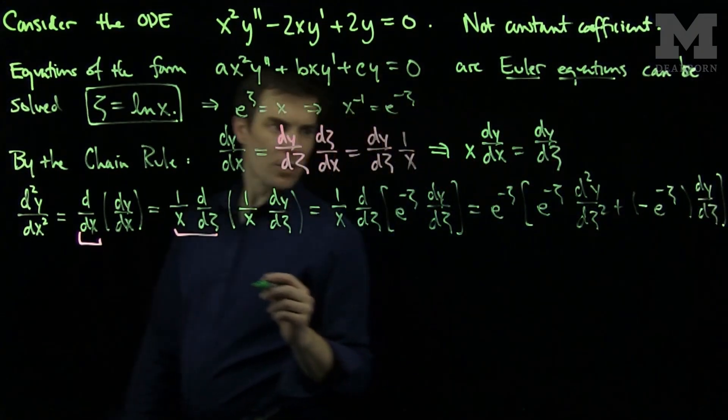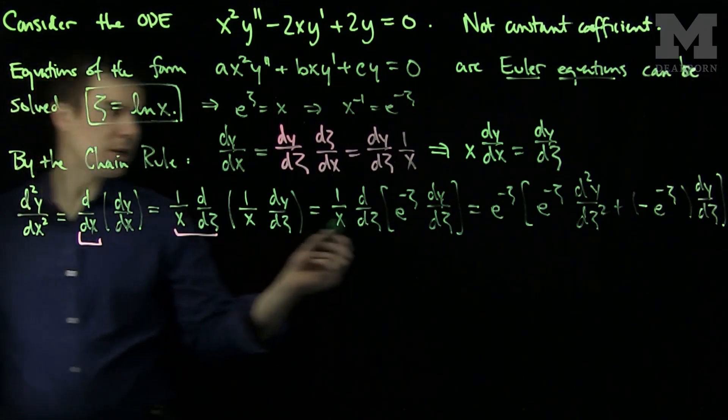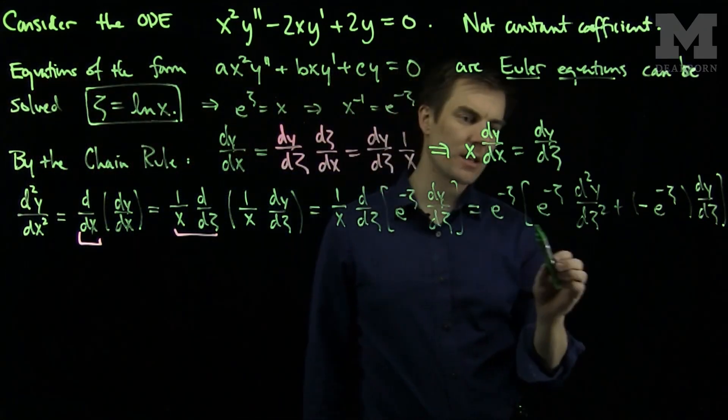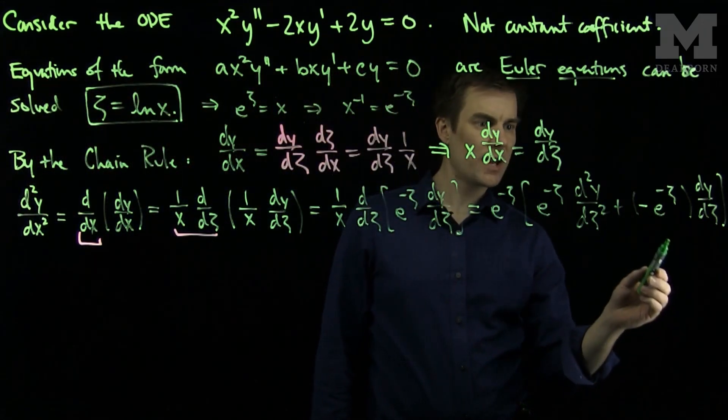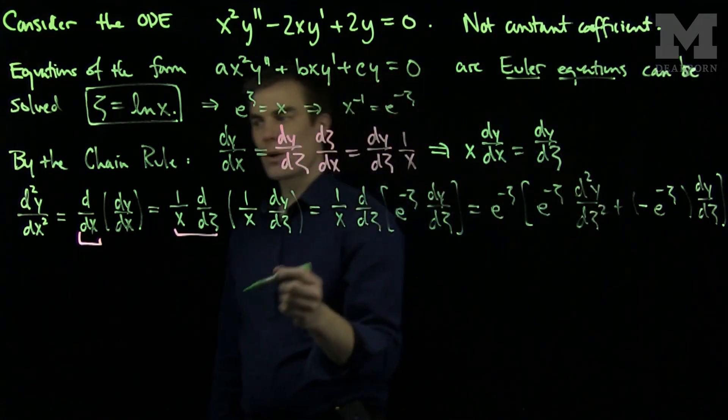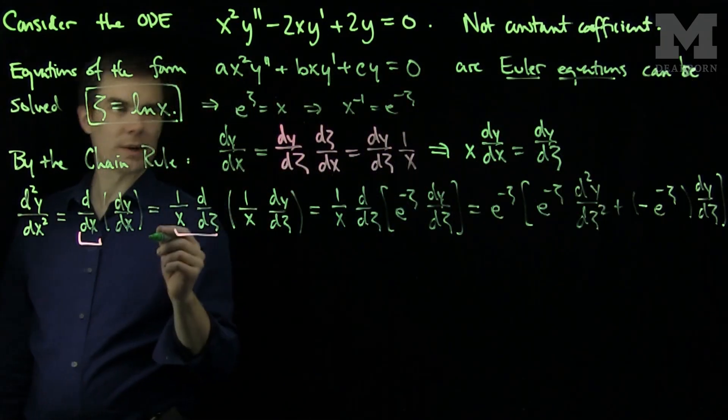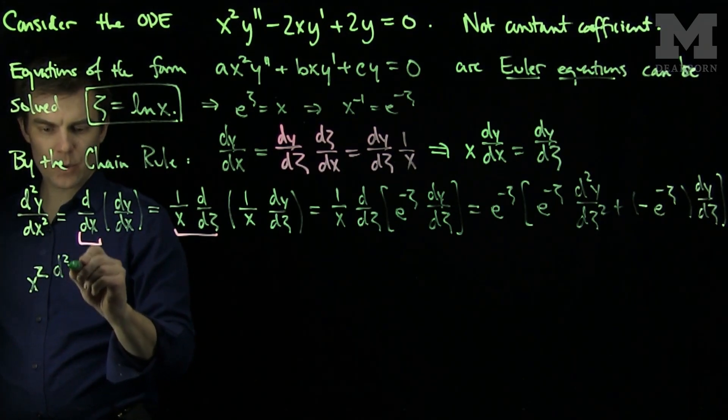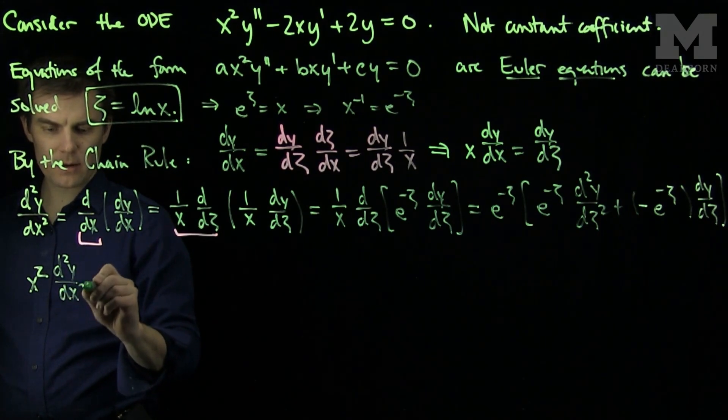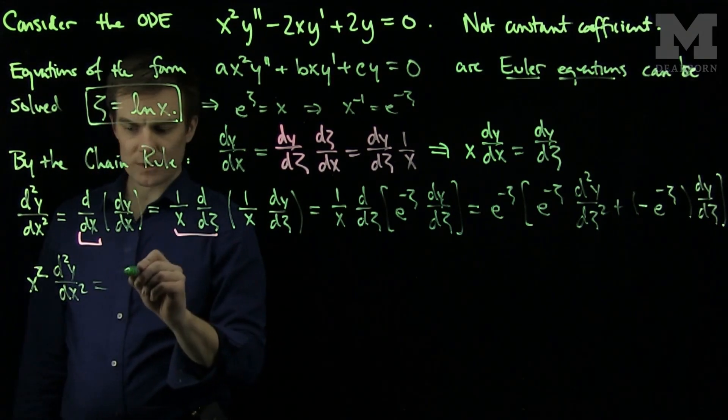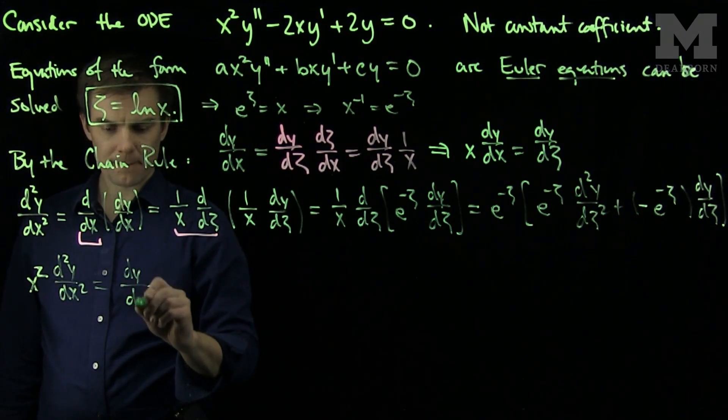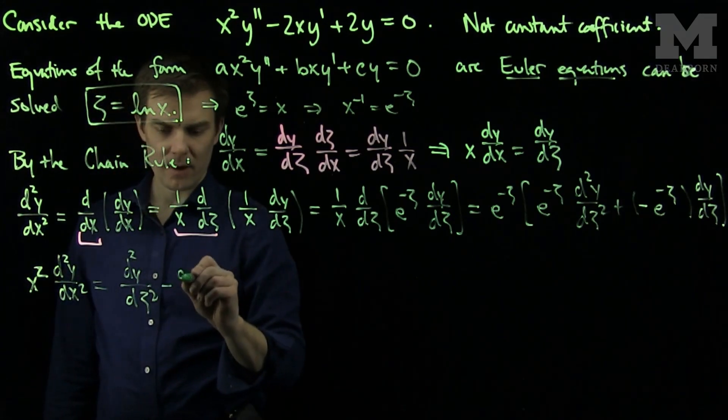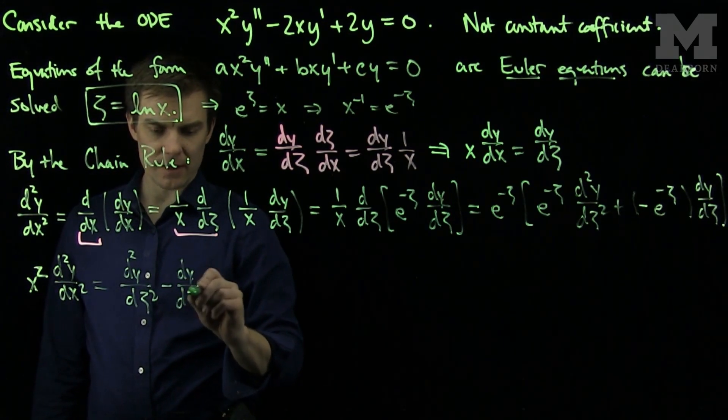So altogether what we have is that each of these terms is an e to the negative 2 zeta. So I will multiply the equation by e to the zeta squared or e to the 2 zeta. So I have x squared which is e to the 2 zeta times d squared y dx squared is equal to dy d zeta second derivative minus dy d zeta.